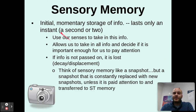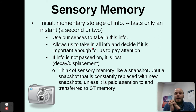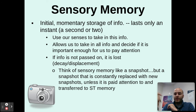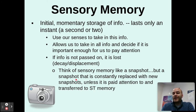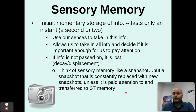First up is sensory memory — the initial momentary storage of information. It can last an instant, maybe a second or two. This is when we use our senses to take in information. It allows us to take in all this info and decide if it's important enough to pay attention to. If it's not passed on from sensory to short-term, it's lost — we call that decay or displacement. These memories are displaced very quickly. You can think of sensory memory like a snapshot that is constantly replaced with new snapshots unless it's paid attention to and transferred to short-term memory.